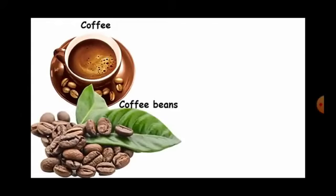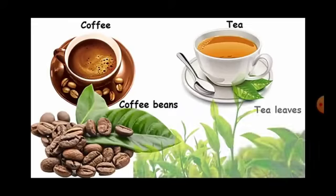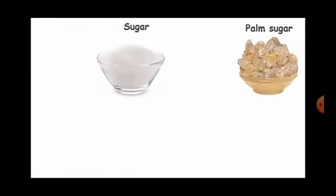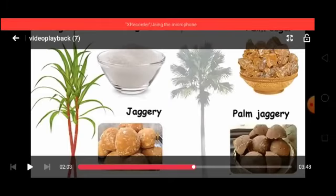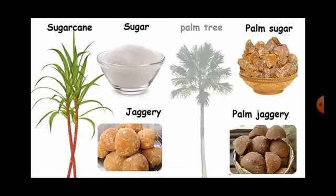We get coffee from coffee beans and tea from tea leaves. We get sugar and jaggery from sugar cane. We get palm sugar and palm jaggery from palm tree.